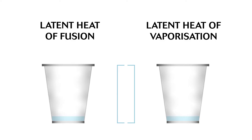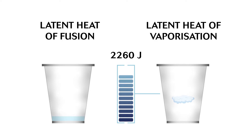Latent heat of vaporization is the energy required to change a liquid into a gas. For example, the latent heat of vaporization of water is 2260 joules per gram. This means that it takes 2260 joules of energy to vaporize 1 gram of water into 1 gram of steam.